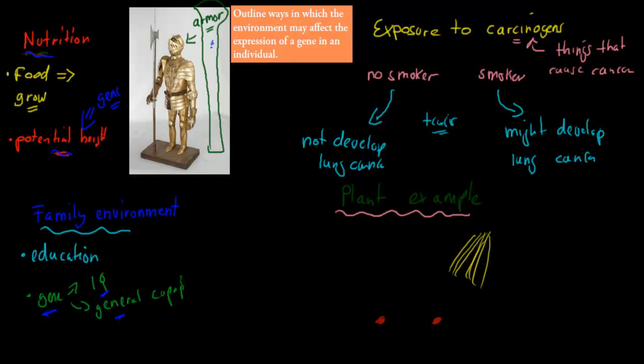Whereas the other one, you keep them in the darkness. What you're going to see is, you're going to see the one who has the ideal conditions, it might grow to its normal height, its potential, its genetic potential height. Whereas the plant that has no exposure to light, because it needs light to produce sugar and to grow, the one that has no light might not grow at all.